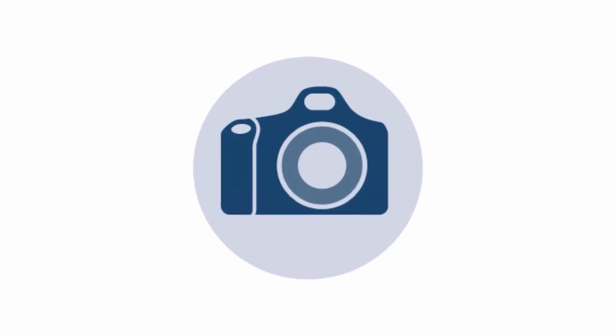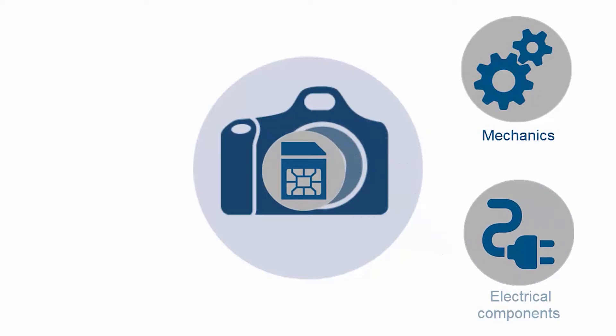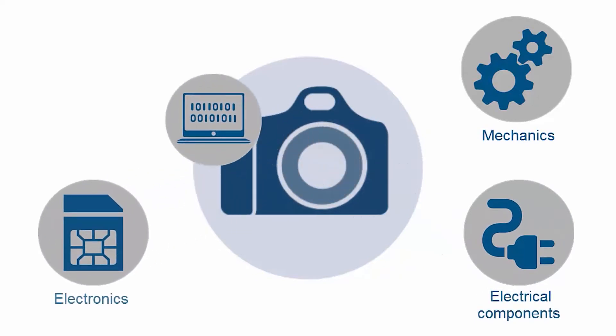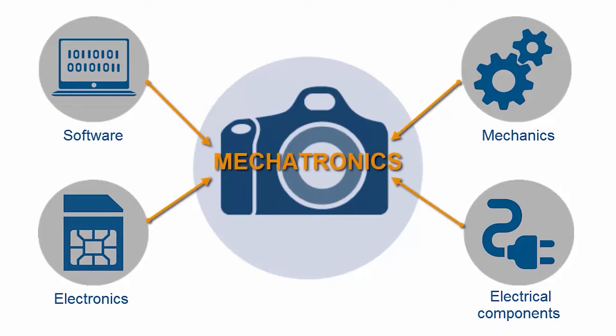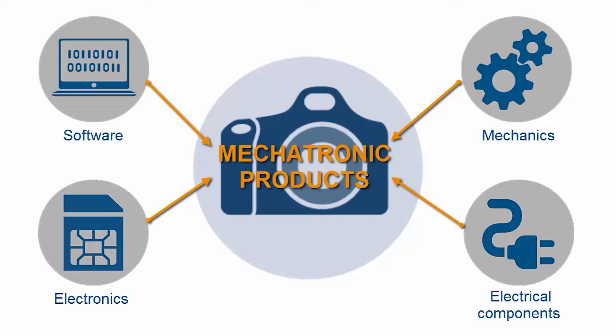Products are much more than just the sum of their parts. The functionality of a product strongly depends on the interaction of its mechanics, electrical components, electronics, and software. This interaction is also referred to as mechatronics. Mechatronic products deliver functionalities that would have been impossible just a few years ago. The growing product complexity we are facing today is mainly caused by the strong dependencies between these four domains.